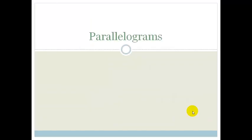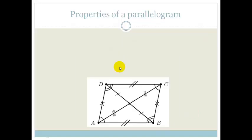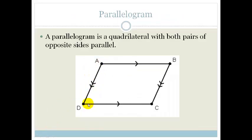The first thing we need to look at is the different properties of a parallelogram. What makes a parallelogram? A parallelogram is a quadrilateral with both pairs of opposite sides that are parallel. AD is parallel to BC and AB is parallel to DC. Both pairs of opposite sides are parallel — that is the definition of a parallelogram.